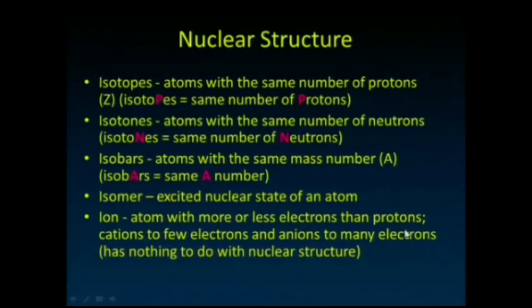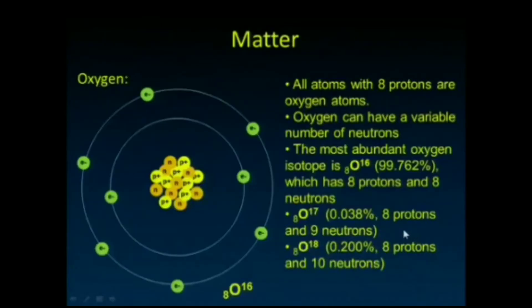Here's oxygen—all atoms with eight protons are oxygen atoms. Oxygen can have a variable number of neutrons. The most abundant oxygen isotope is O-16, with eight protons and eight neutrons. In fact, 99.762% of all naturally occurring oxygen occurs in that form. There's O-17 and O-18—by the way, both of these are stable, they don't undergo radioactive decay—and a very small percentage of natural occurring oxygen is in those two forms.